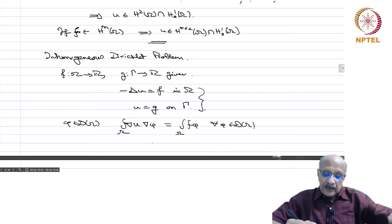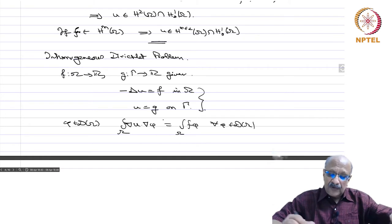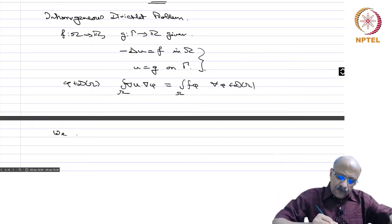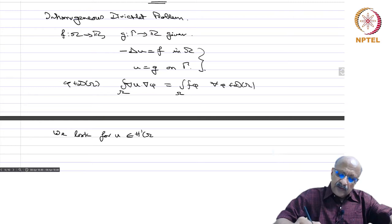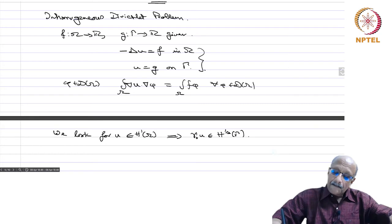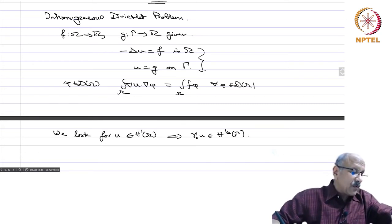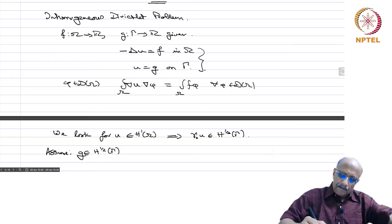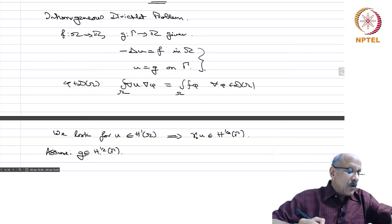This is called the inhomogeneous Dirichlet problem. Multiplying by phi in D(omega) and using integration by parts, you get integral of grad u · grad phi equals integral f phi for every phi in D(omega), with no boundary term since phi vanishes on the boundary. We look for u in H^1(omega), so these integrals make sense, and the trace theorem implies that gamma_0(u) must belong to H^{1/2}(gamma). Therefore we assume g belongs to H^{1/2}(gamma).